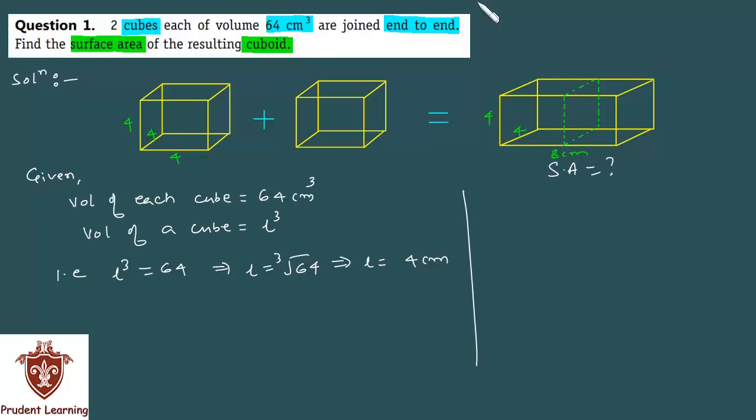Thik, now, aapko kya find karna tha, surface area. We know that surface area of a cuboid is given by, mein formula likhta ho, twice of LB plus BH plus LH.